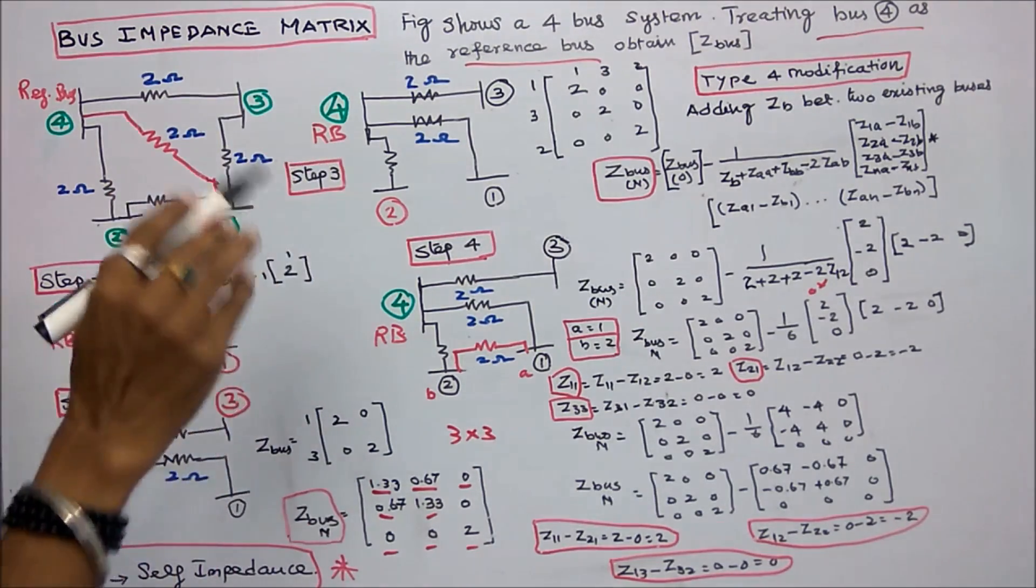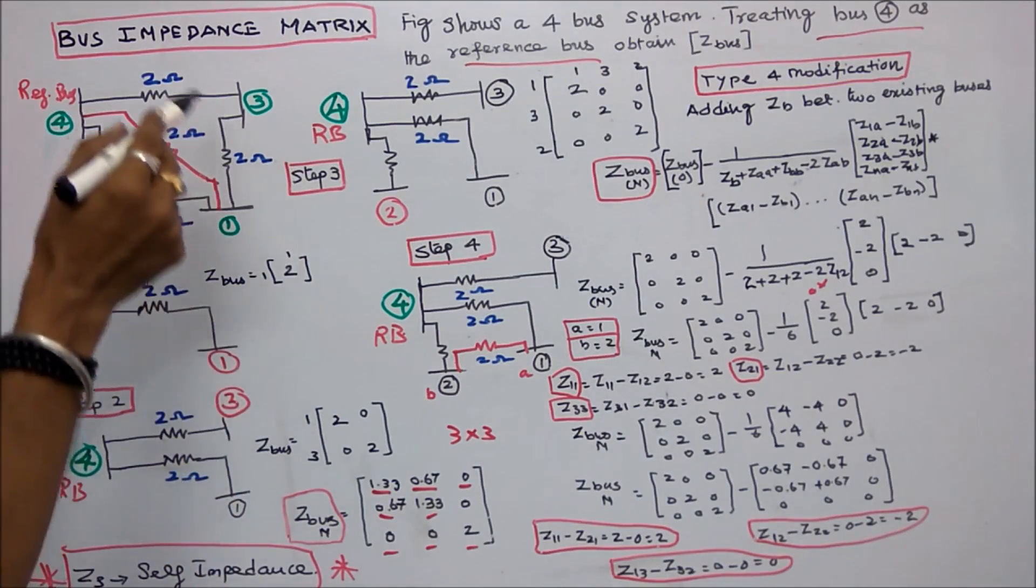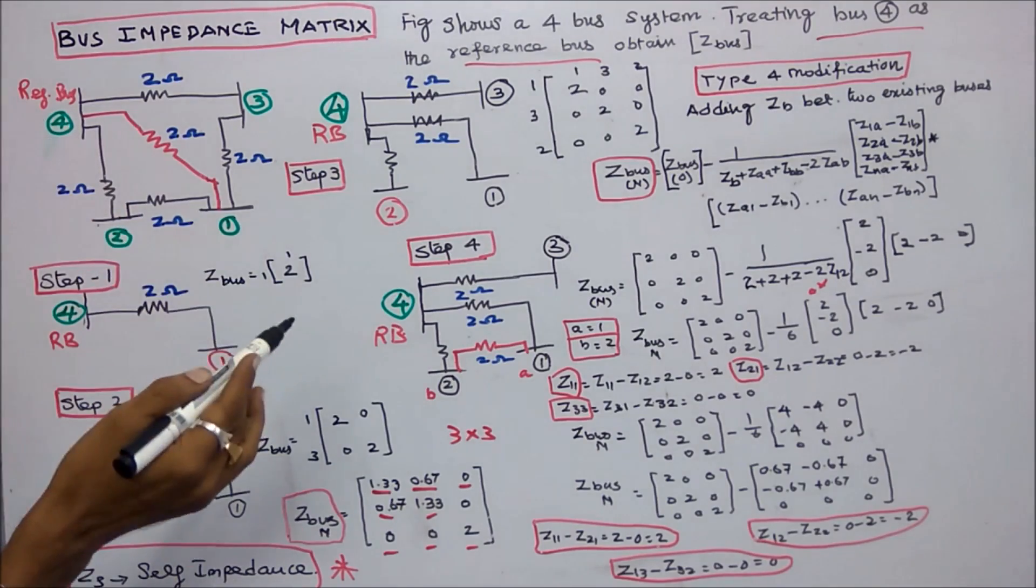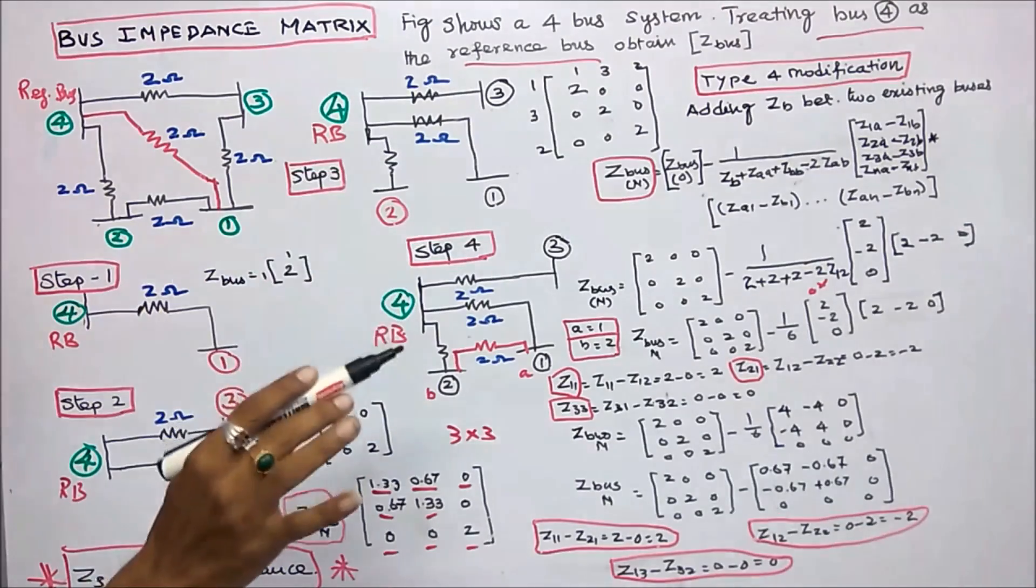This class we work out one problem on bus impedance matrix. Figure shows a 4 bus system. Treating bus 4 as the reference bus, obtain Z bus matrix. That is the question.